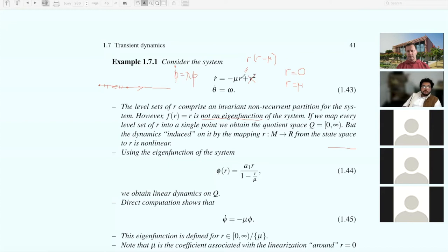But F of R equals R is not an eigenfunction of the Koopman operator. How do we know that? In order for R to be an eigenfunction, Koopman eigenfunctions satisfy phi dot equals lambda phi for some real or complex lambda. Clearly that's not the equation that R satisfies—it's minus mu R plus R squared. So the dynamics on this partition is non-linear.